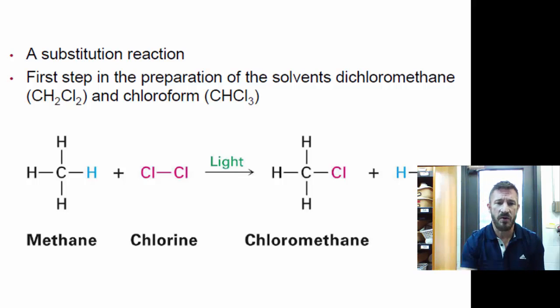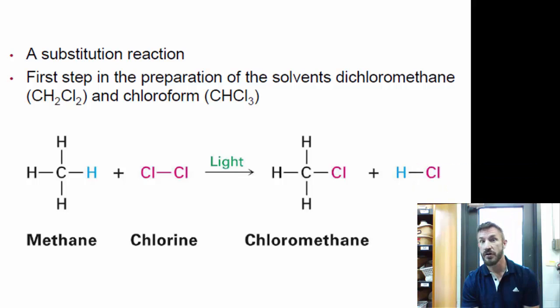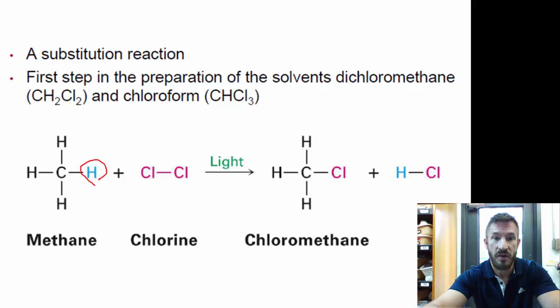And here's another example. This is just a substitution reaction we mentioned earlier drawn out. This is methane combined with the chlorine. What happens? One of the hydrogens, we see here, is simply replaced by one of the chlorines. At the end, we have chloromethane, and then hydrogen chloride as a gas.